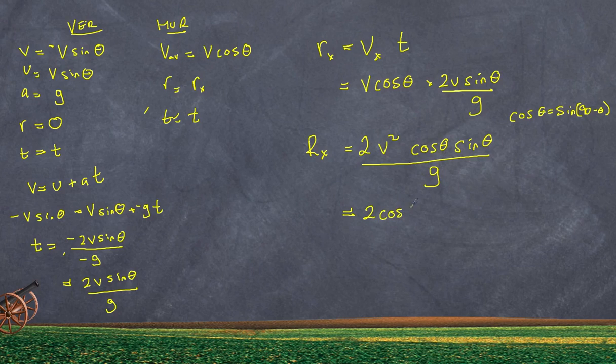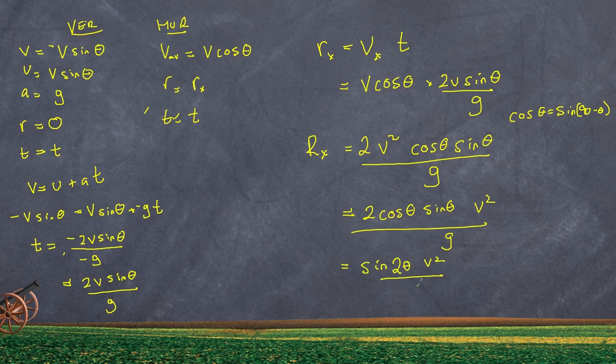2 cosine θ multiplied by the sine of θ multiplied by v² over g. What is 2 cosine θ sine θ? Well that is equal to the sine of 2θ multiplied by v² over g. Now why is this significant?